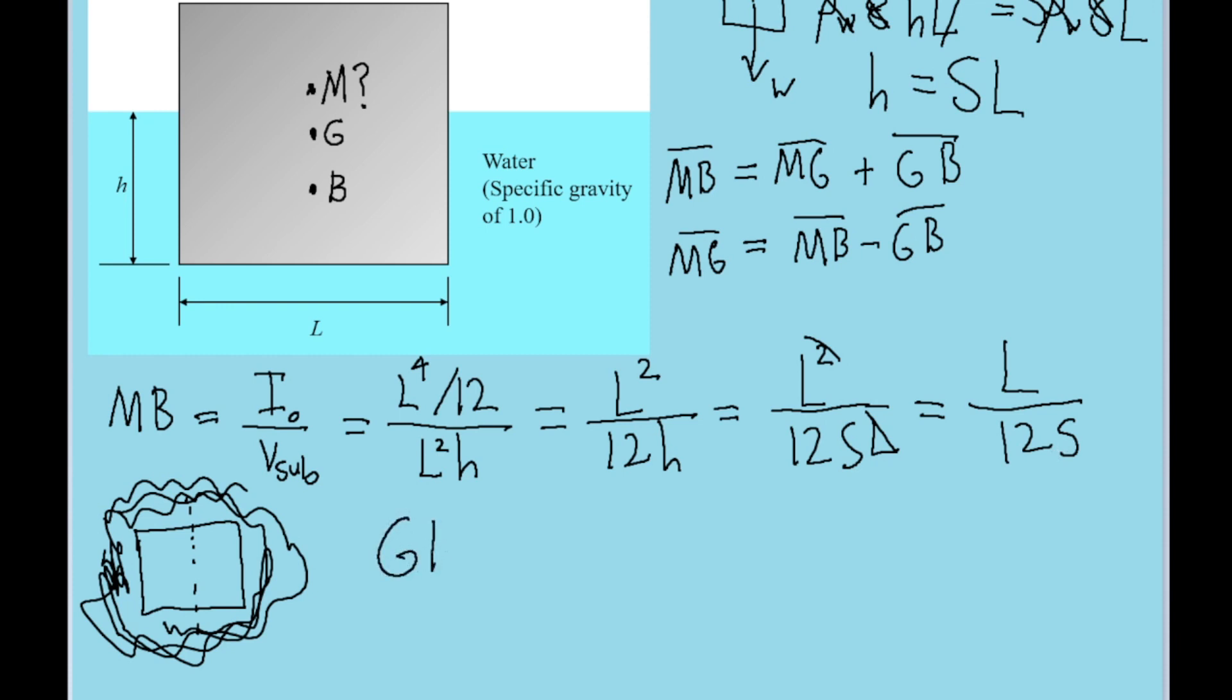Now let's take a look at GB. GB is the length from the center of gravity G to the center of buoyancy B. Most of the time, especially in simple geometry like this, the center of gravity is located right in the middle of the shape. So the height of G from the bottom is half of one side length, L over 2. As for point B, the center of buoyancy is located at the center point of the submerged portion. So the height from the bottom is h over 2. Therefore, GB is L over 2 minus h over 2.